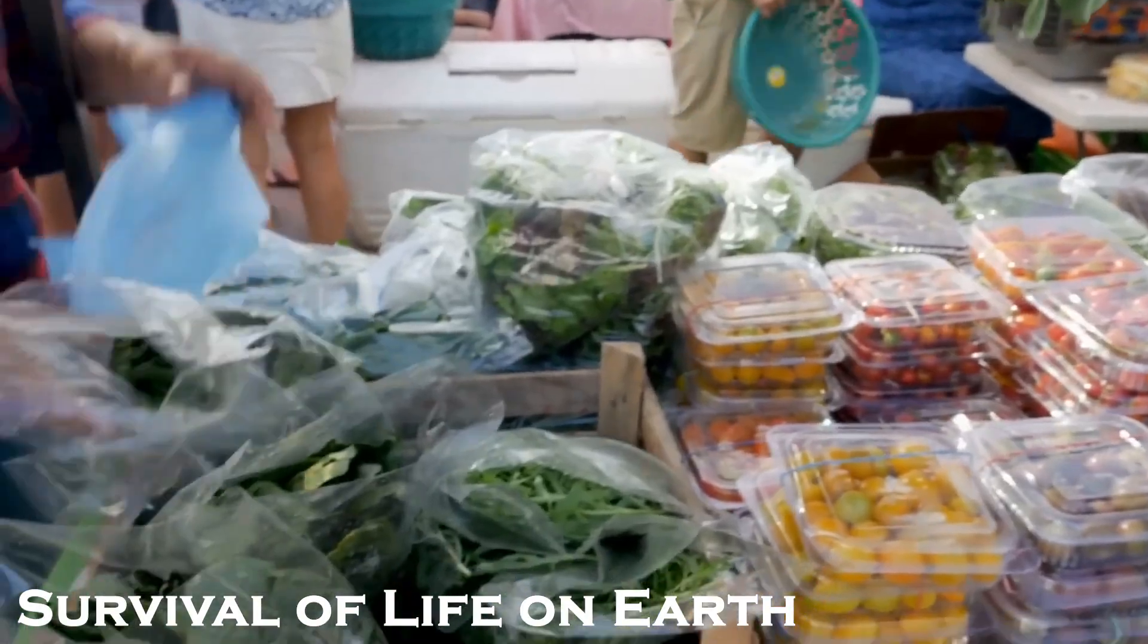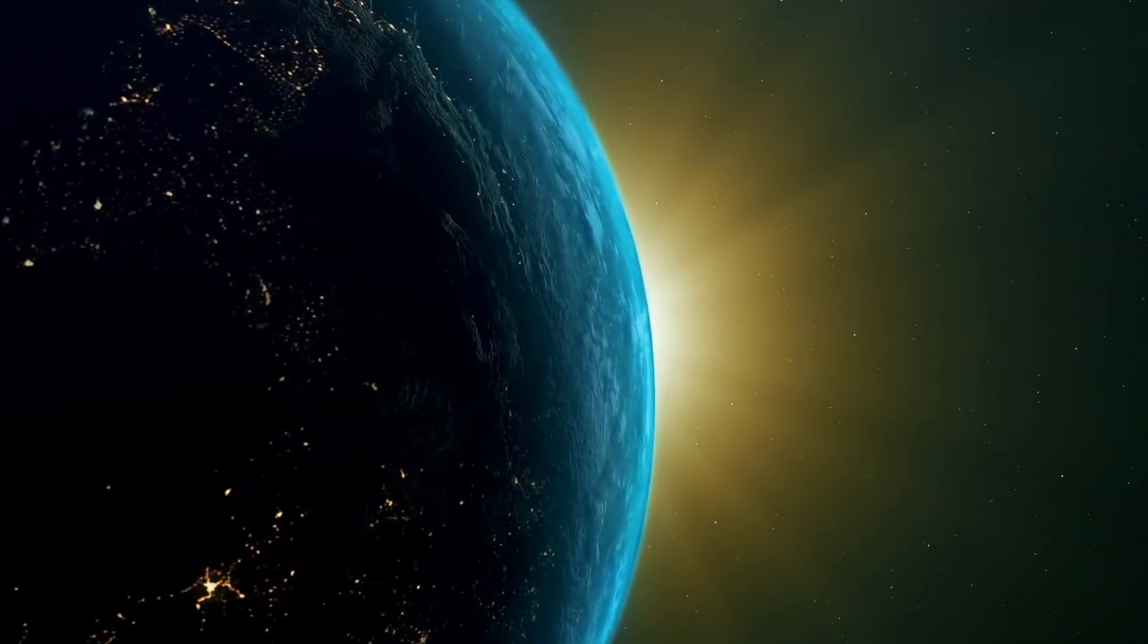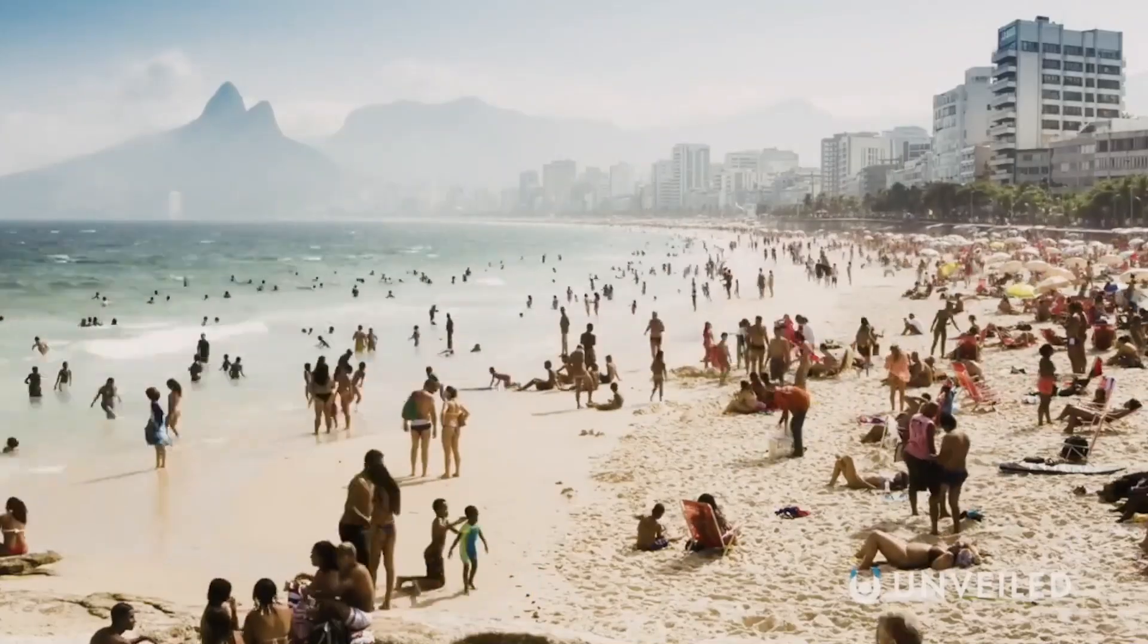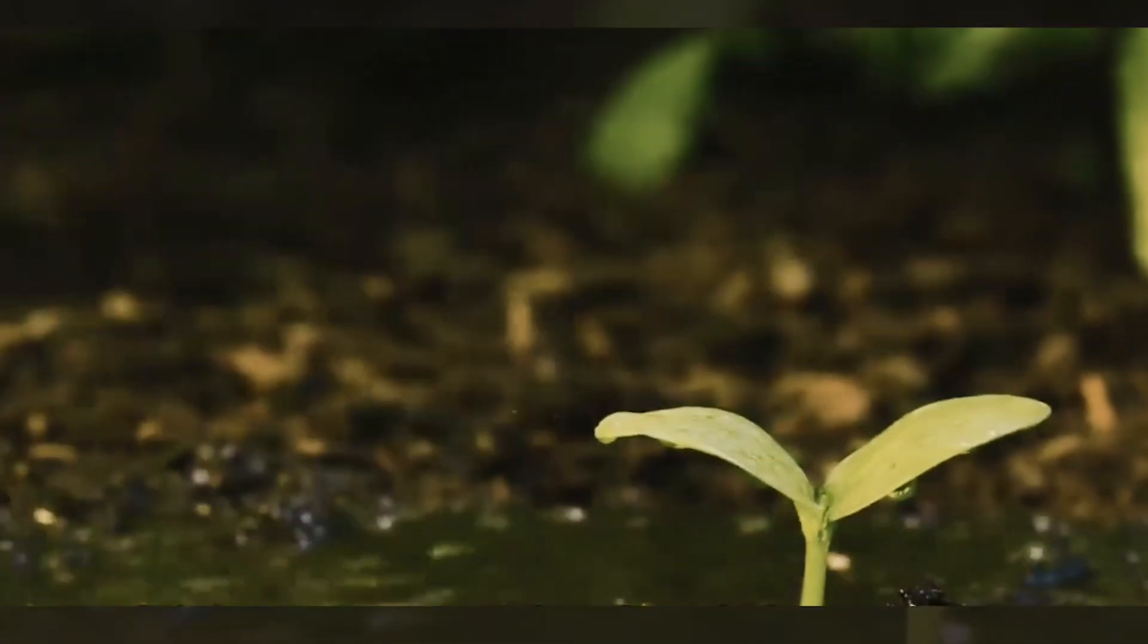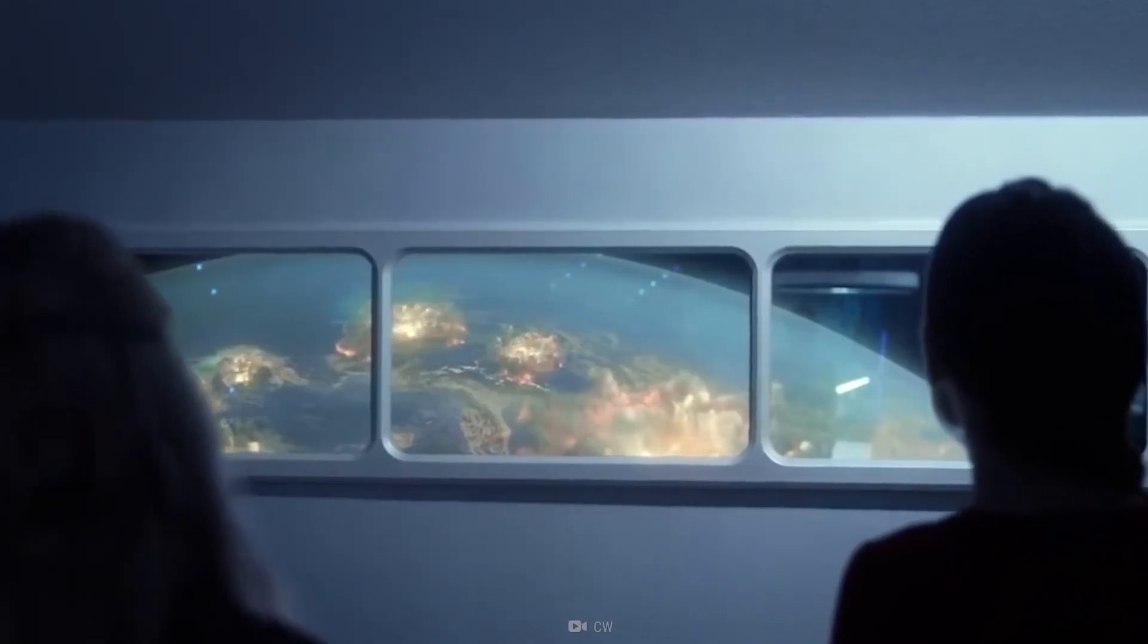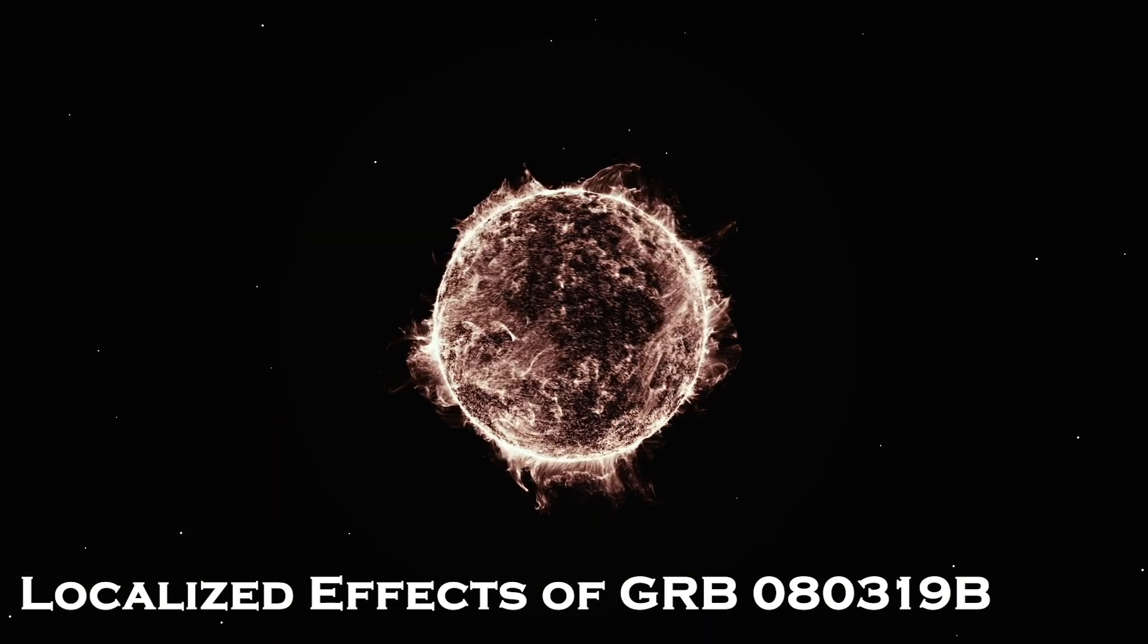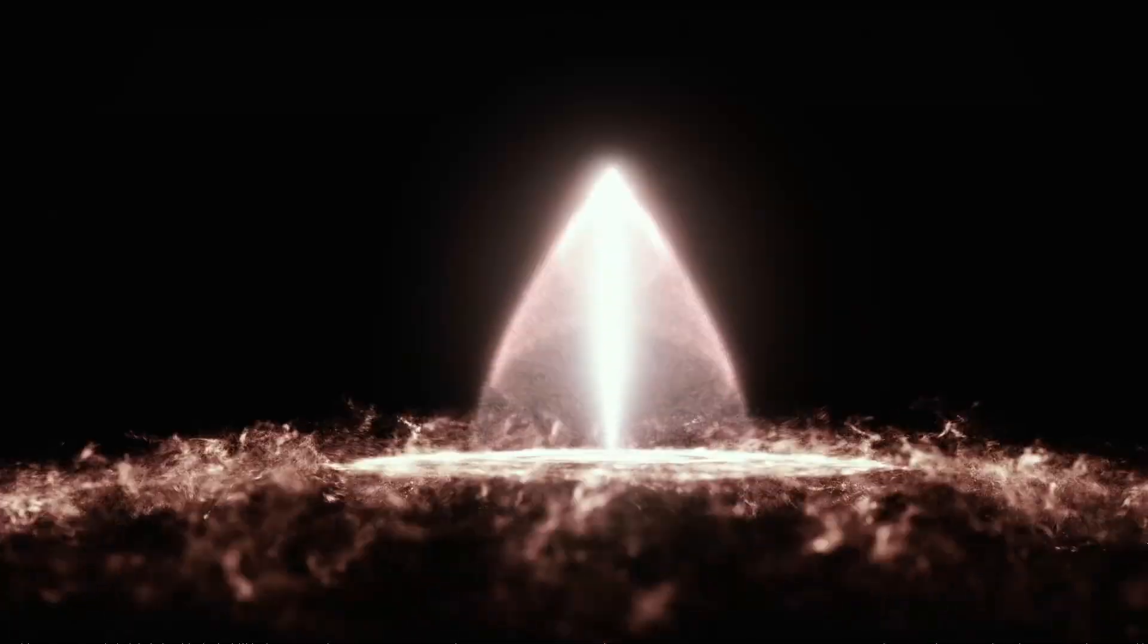Survival of Life on Earth. The survival of life on Earth, including human life, would depend on the severity of the long-term effects caused by a nearby GRB. While localized effects, such as ozone depletion, could have detrimental consequences for certain organisms and ecosystems, the overall survival of life on Earth is not likely to be threatened by a single GRB event. Earth has shown remarkable resilience throughout its history, surviving and recovering from various catastrophic events. Life on our planet has proven to be adaptable and resilient in the face of significant challenges. However, it is important to continue studying and monitoring GRBs to better understand their potential long-term effects and develop strategies to mitigate any potential risks.